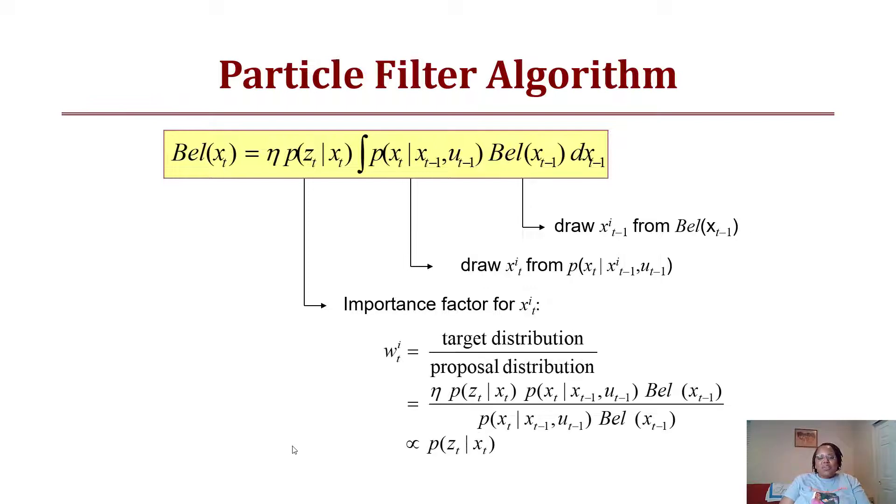The weight is found from the target distribution divided by the proposal distribution. For our target, it's the normalization factor times the probability of z_t given x times the probability of x_t given x and u and the belief of x of t minus 1, all divided by our proposal distribution, which is the probability of x given x the belief times the belief x of t minus 1. That's our target divided by our proposal, which basically becomes proportional to the probability of z given x_t.